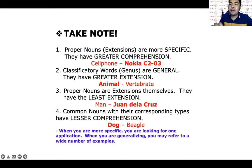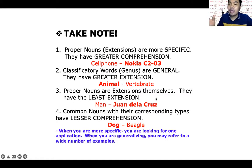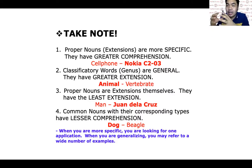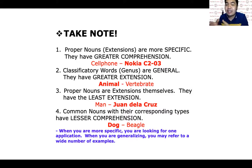Rule number three: proper nouns are extensions themselves, so they have the least extension. For example, 'man' and 'Juan de la Cruz' — Juan de la Cruz is a man, one of many men. Juan de la Cruz is a proper noun, so he is an extension himself — he has the least extension. Rule number four: common nouns with their corresponding types have lesser comprehension. For example, 'dog' and 'beagle' — the general noun is 'dog,' which has lesser comprehension than the specific noun 'beagle,' because beagle is a type of dog.